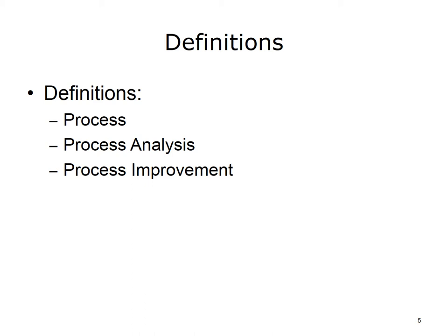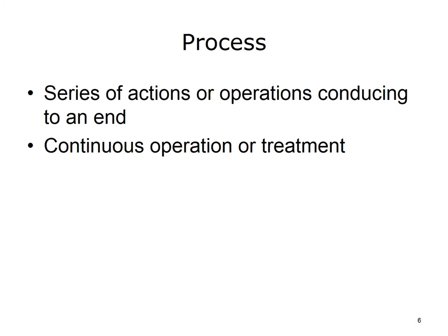Before we start, as an introduction, we will cover the following definitions: process, process analysis, and process improvement. Merriam-Webster defines process as a series of actions or operations conducing to an end, especially a continuous operation or treatment. Similarly, the American Society for Quality defines process as a set of interrelated work activities characterized by a set of specific inputs and value-added tasks that make up a procedure for a set of specific outputs.